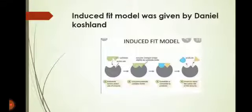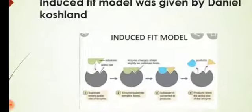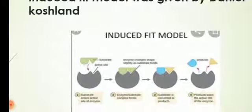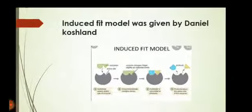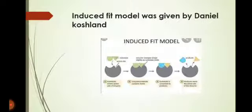Another is the induced fit model. The induced fit model was proposed by Daniel Koshland. It states that a substrate comes to bind with the active site to perform its function. If the active site has a different shape than the substrate, then the active site will change its shape according to the substrate and fit to it — that is the induced fit model.